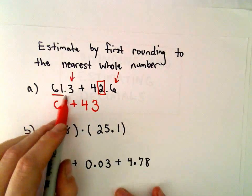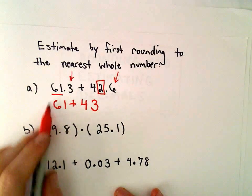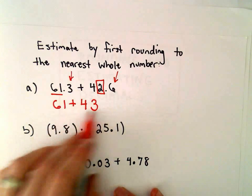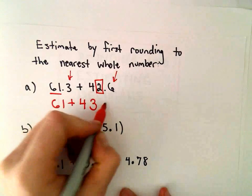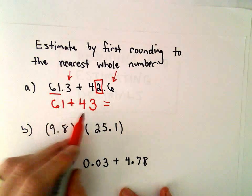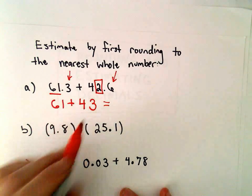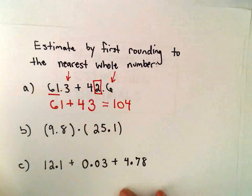Since that is 5 or larger, we're going to round our next digit up, and we'll get 43. So 61.3 is closest to the whole number 61. 42.6 is closest to the whole number 43. If we add those, let's see, 60 and 40 is 100. 1 and 3 is 4.